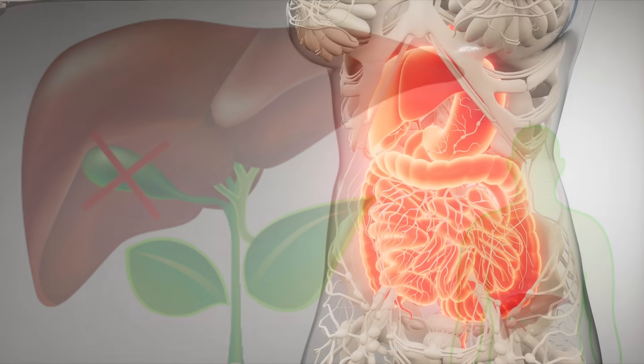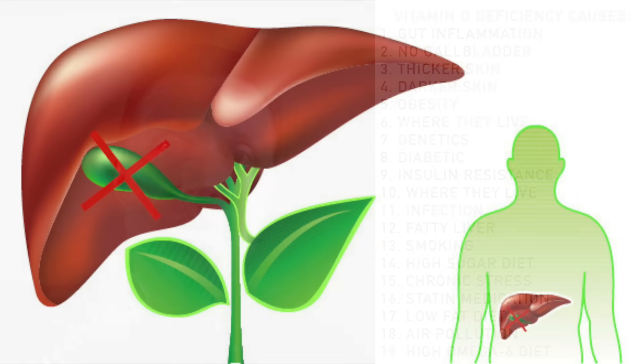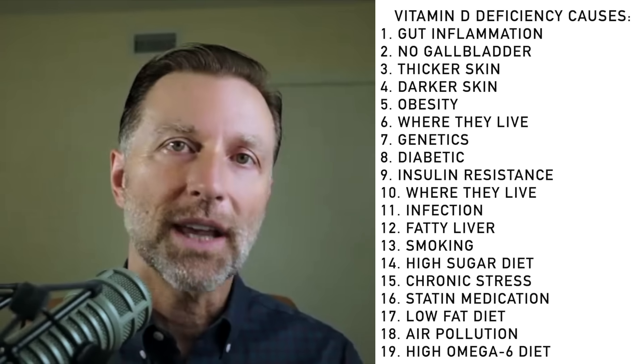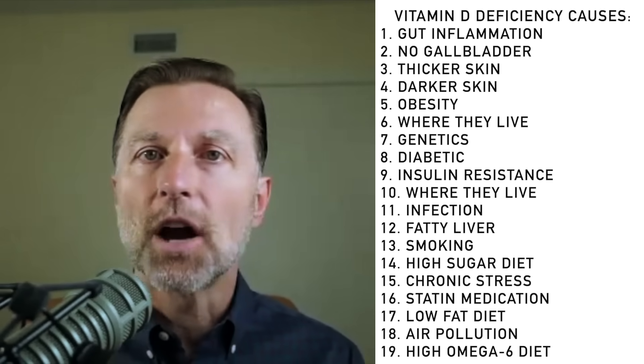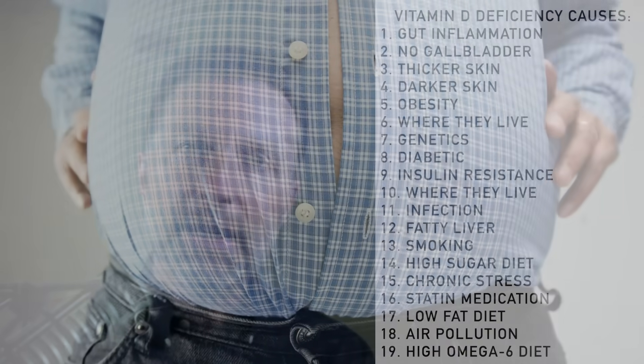But many people know some of the common reasons why the majority of the population is deficient in vitamin D: gut inflammation, no gallbladder. As we age, our skin becomes thicker and we can't absorb vitamin D from the sun. The darker the skin is, the less vitamin D absorption because of the melanin.